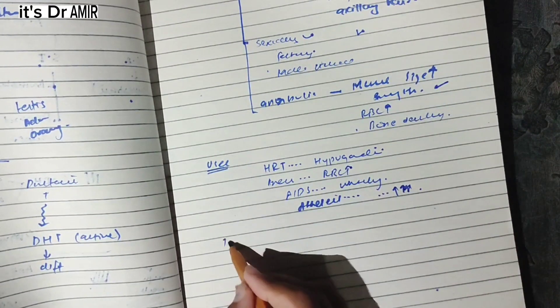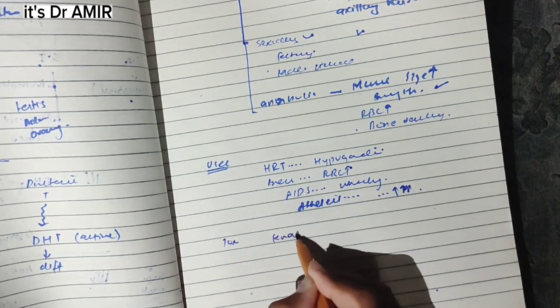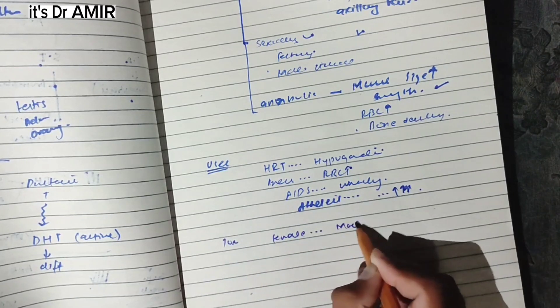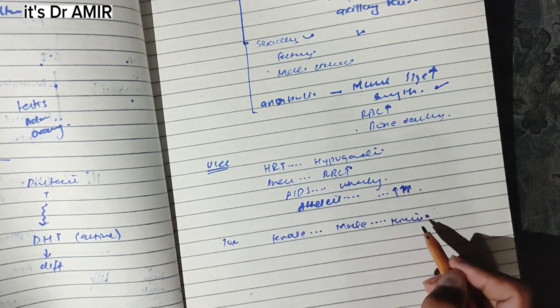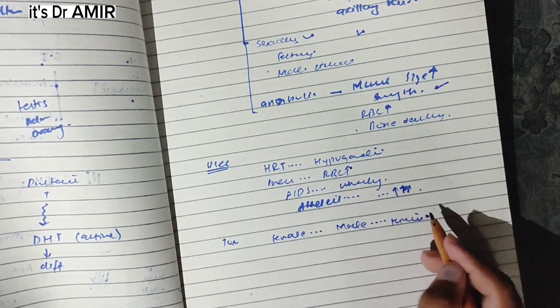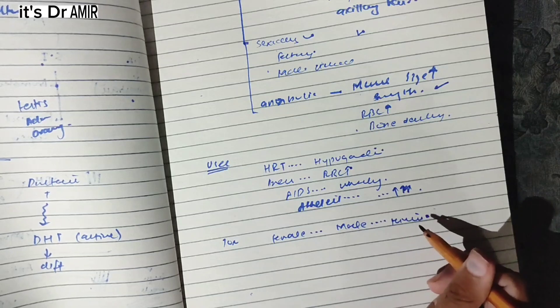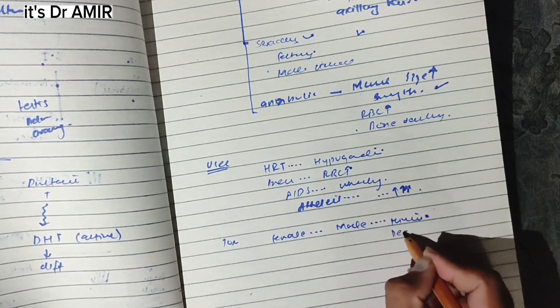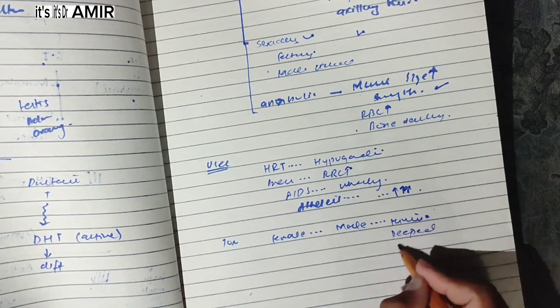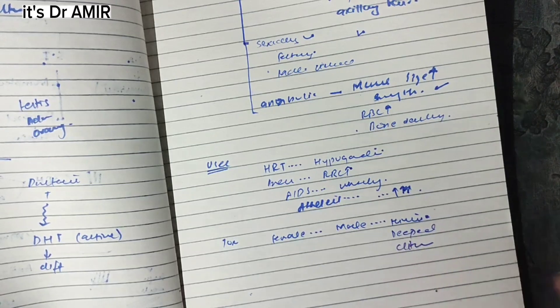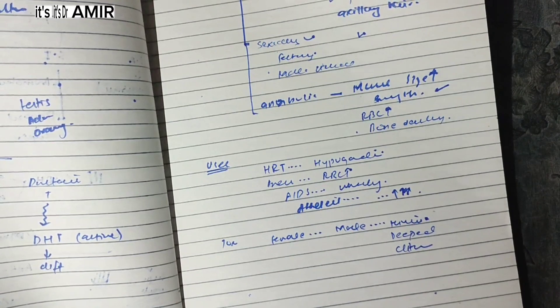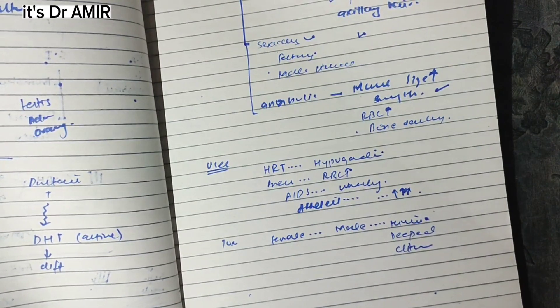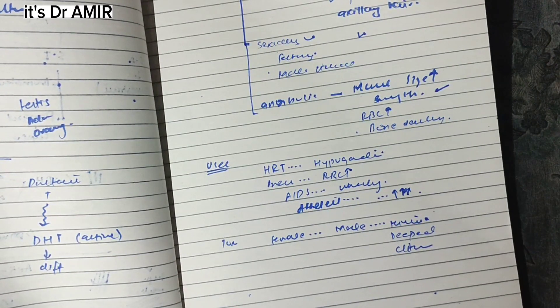Now, if we talk about toxicities, you can tell that if females take this more, they will start developing male-like characteristics. Male characteristics will appear in the body, chest, and legs. Hair growth will start. Their voice will deepen because the larynx will enlarge. Male reproductive organs will enlarge. The menstrual cycle will be irregular and infertility can occur.